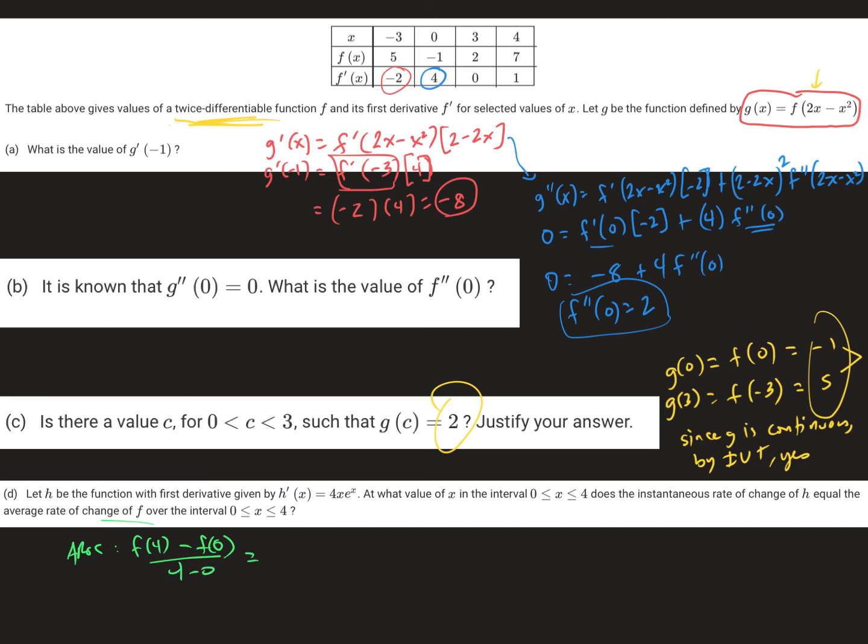And I can use the table to get those values. f of 4 is 7 minus f of 0 is negative 1. So that's going to give me 2. And then I want that to equal the instantaneous rate of change of h. Well, they've already given me that. I don't need to take a derivative, it's just that thing. So I would use my calculator to set 4x times e to the x equal to 2. And then I would solve that. And I've already done it before, and it is 0.352. And again, on the calculator parts, which this one is, if you're using your calculator to solve an equation, you don't need to show any work, just the equation and straight to the answer.